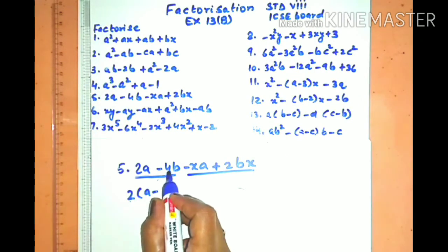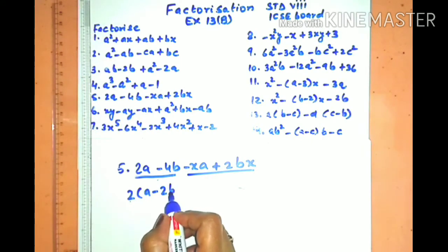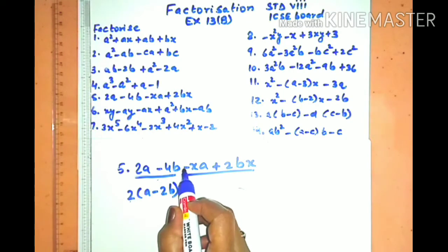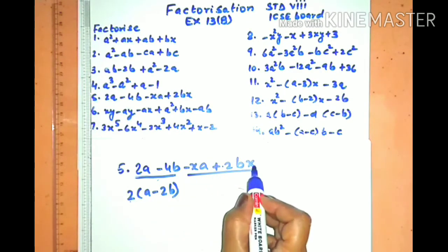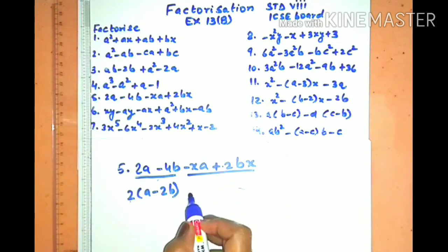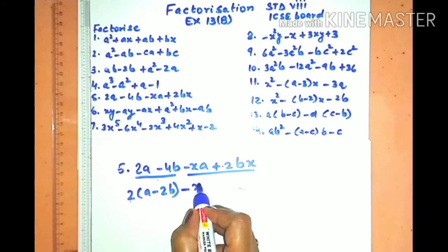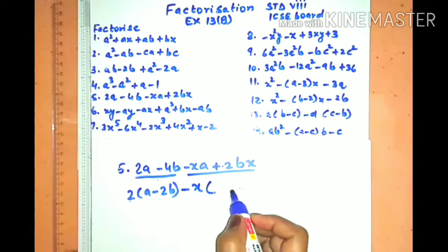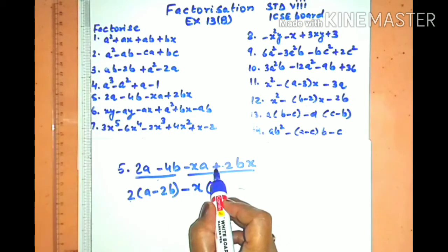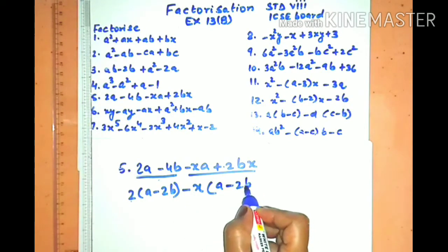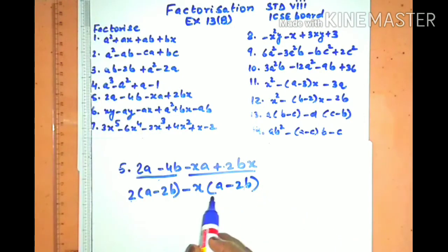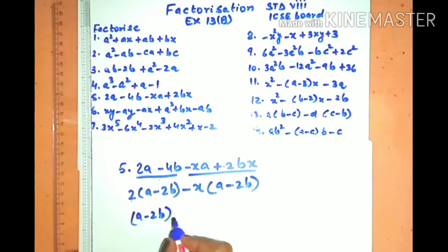Sum number five. Make pairs. In the first pair, the common factor gives (a − 2b) in the bracket with 2b. In the second pair, we have minus and plus signs, so we take out minus x as the common factor. The plus sign in the bracket becomes minus, giving (a − 2b) again. These two terms have (a − 2b) as a common factor, and what remains in the bracket is (2 − x) — wait, (2 minus x), giving the final answer.